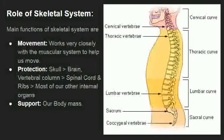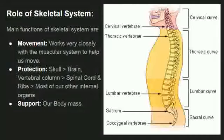Role of skeletal system: Skeletal system ki major functions mein protection, support and movement include hai. Hamari body mein skeleton muscular system ki saath milkar kaam karta hai to help us move. Isi tara skeleton many internal organs ko protect karta hai, jaisi ke skull brain ko, vertebral column spinal cord ko, and ribs humare bohut se other internal organs ko protect karta hai. Vertebral column also provides the main support to our body mass.